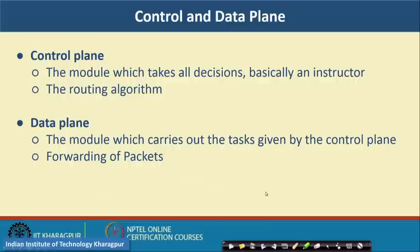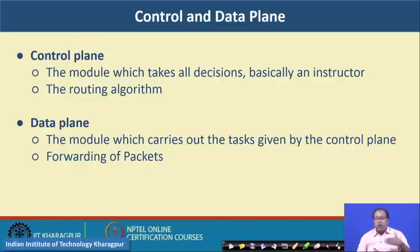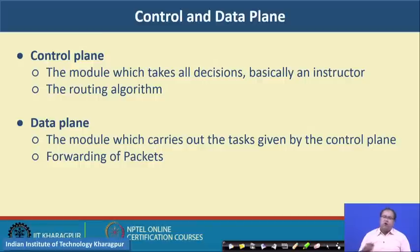You take out the brains from the router — the control plane works like the brain of the router because it makes decisions — and that hardware just performs forwarding processing. You put this brain in a centralized place, which is your route controller. The control plane is the module which takes all the decisions; the routing algorithm is implemented in the control plane. The data plane is the module which carries out the task given by the control plane — the forwarding of the packets.